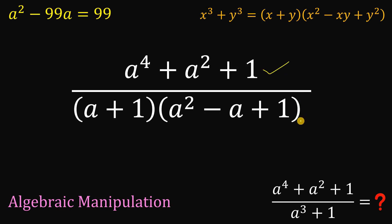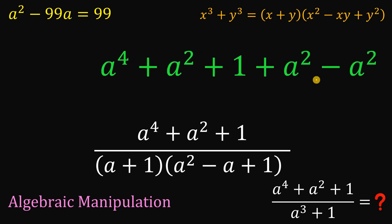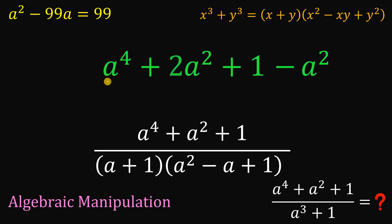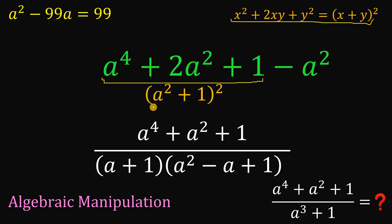Now the big question is how about the numerator — and this is the hard part. To factor the numerator, we will use the add and subtract method. We need to add and subtract a squared in this expression. Adding a squared minus a squared is just 0, but a squared plus a squared gives us 2a squared. This makes a to the fourth plus 2a squared plus 1, which is a perfect square trinomial. We can factor this as the quantity a squared plus 1, all squared.